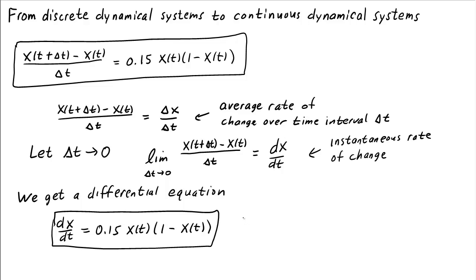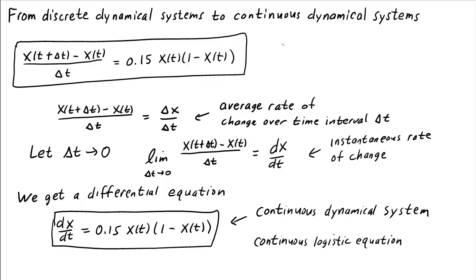This differential equation is a continuous dynamical system. In particular, it's the continuous logistic equation. One can see that by starting with a discrete dynamical system and letting the time interval get smaller and smaller, one can come up with a continuous dynamical system, or a differential equation, that models how the state variable changes continuously in time.